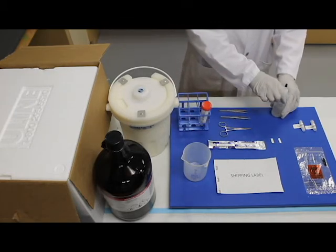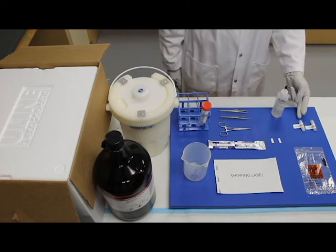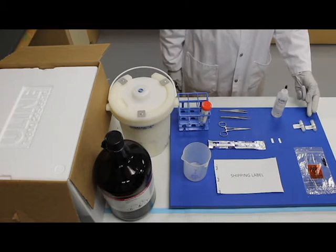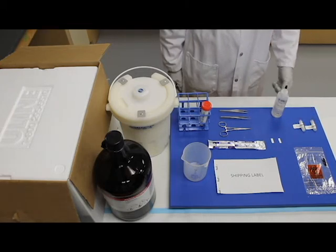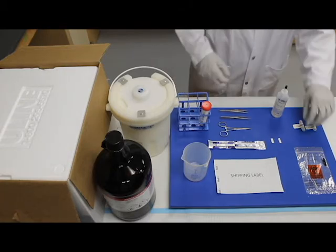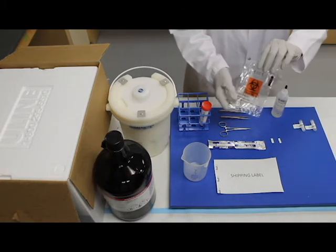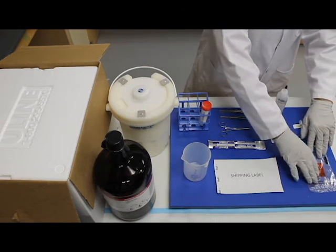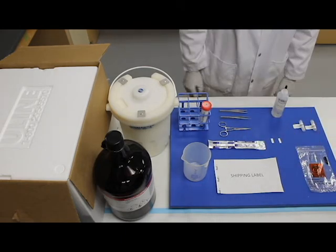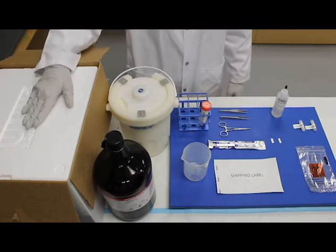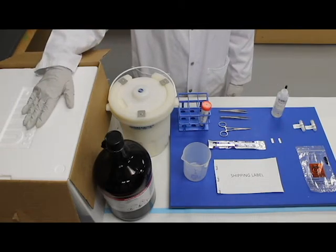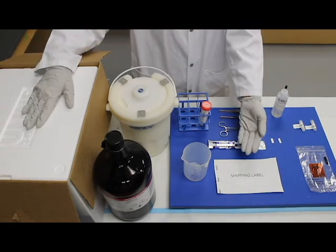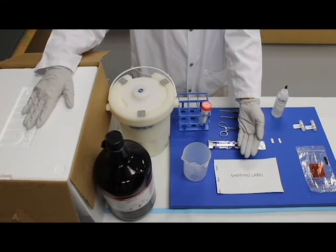Two Nalgene 2ml long-term storage cryogenic tubes, which will be used to store the tissue after freezing. One sealable biohazard sample bag used to store the cryogenic tubes once the muscle biopsy has been processed. One styrofoam shipping container used to ship the samples. A courier prepaid label is to be attached to the outside of the shipping container.